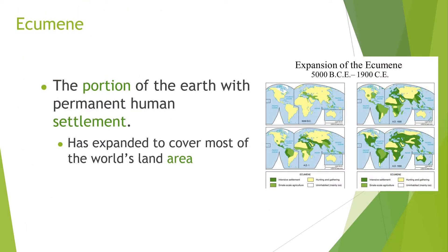Ecumene is the portion of Earth's surface with permanent human settlements, and this has expanded to cover most of the world's land area today. Because of technologies, we are now able to live in parts of the planet that we naturally really shouldn't have been able to live until modern technology.